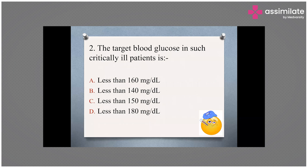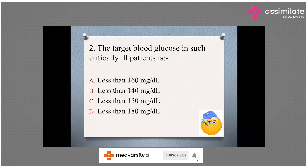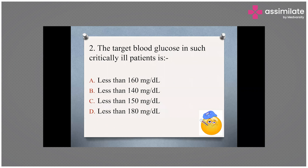The next question is: what is the target blood glucose in a critically ill hospitalized patient? The options are: less than 160 mg/dL, less than 140 mg/dL, less than 150 mg/dL, or less than 180 mg/dL. Dr. Deepa, Dr. Sharat, Dr. Noorul, Dr. Trupti, Dr. Hafsa, Dr. Ramya all wrote option D, Dr. Mohammad wrote option B, and Dr. Ragavi also wrote option D.